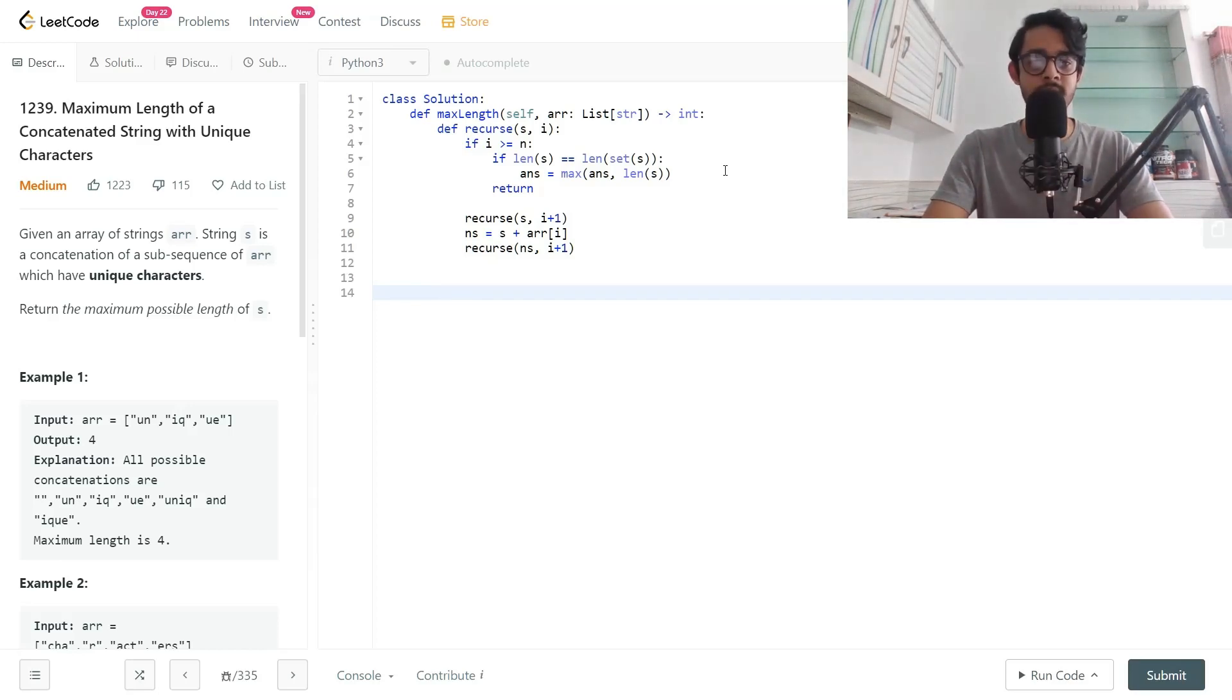I'll set up the base variables. N is the length of the array, answer is zero, and we start recursion with initially empty string and i equals zero. We return the answer at the end. If you try running this it won't work because Python has an issue with variables, so we'll convert this to self.ans.